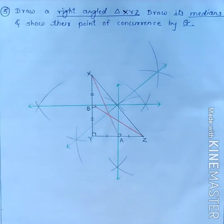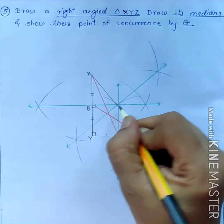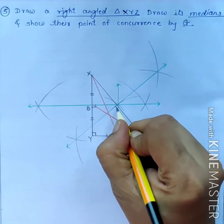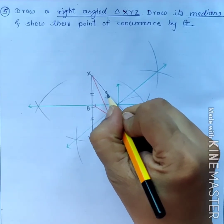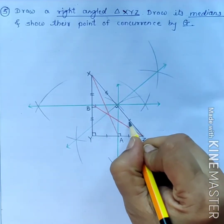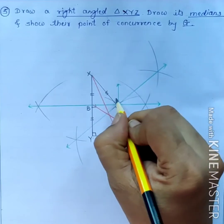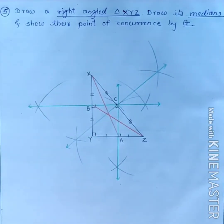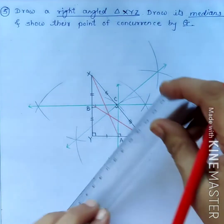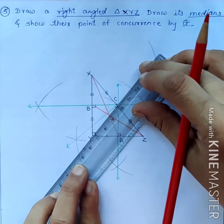You will get the midpoint of side XZ. This is perpendicular to side XZ and bisects this side XZ. Name this point as C. And now, join point Y and C for the third median.